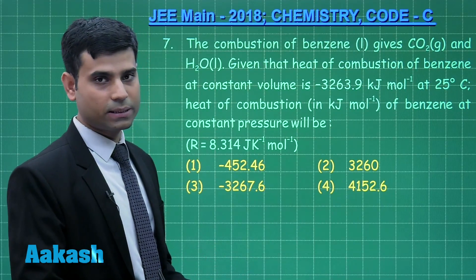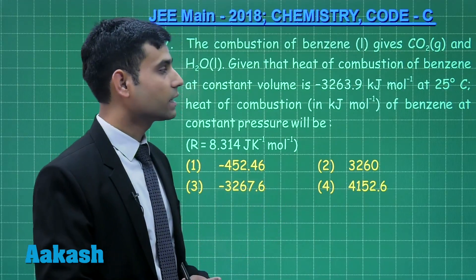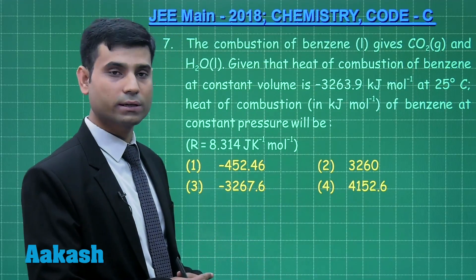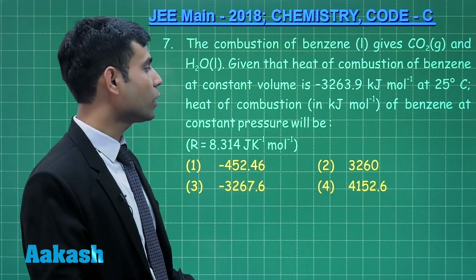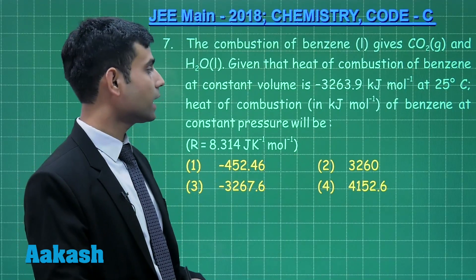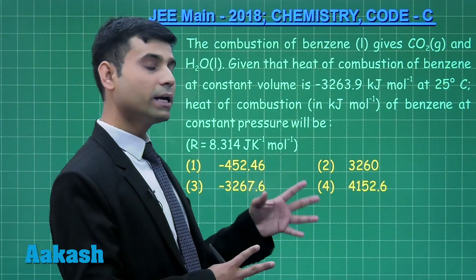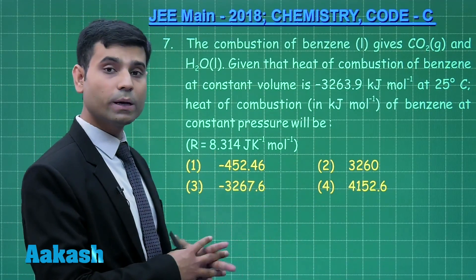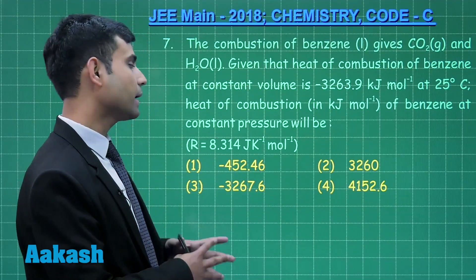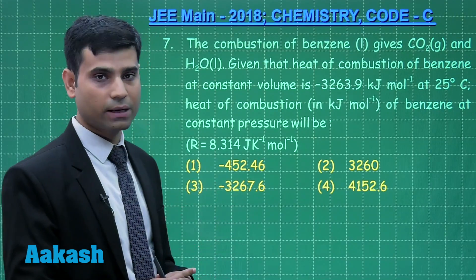Now, let us discuss question number 7. The combustion of benzene gives carbon dioxide and water. The heat of combustion of benzene at constant volume is –3263.9 kilojoule per mole at 25 degree Celsius. Heat of combustion in kilojoule per mole of benzene at constant pressure will be. These are the four options given.